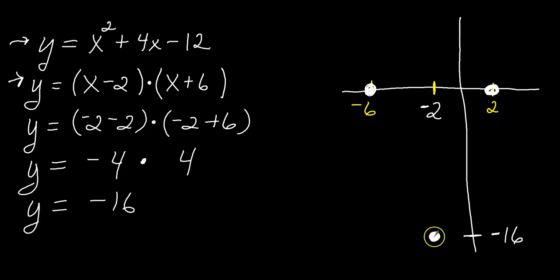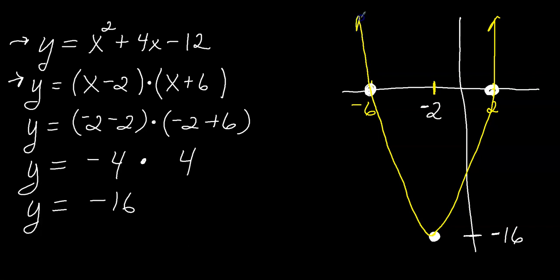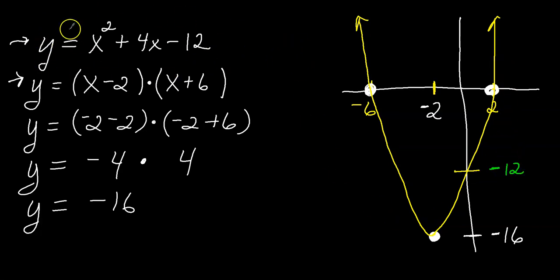Now I can sketch the graph. I have the vertex and the x-intercepts, so the graph should look like the letter U — because of the x squared piece. There's also a y-intercept: this graph crosses the y-axis at negative 12. I know that from the standard form — the constant at the end of the standard form equation gives you the y-intercept. So each different form tells you different information about the graph.